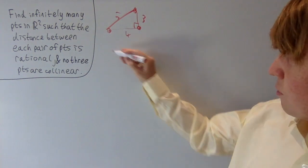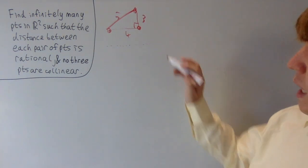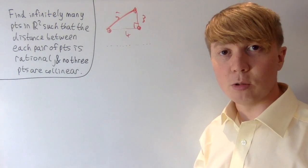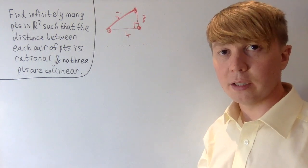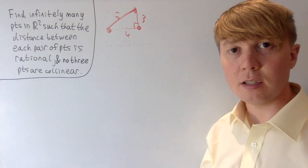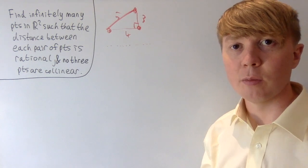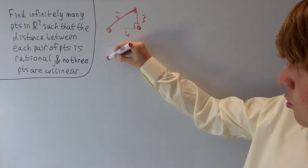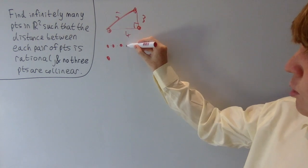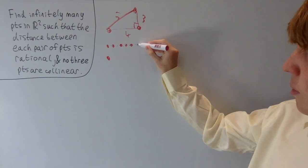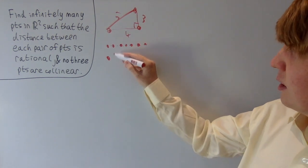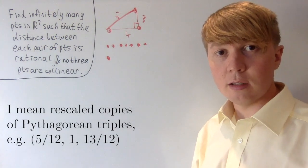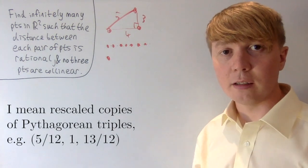There's a really nice way of doing this if you allow all of your points to lie on a straight line. We could just take, for example, the x-coordinate to be rational and the y-coordinate to be 0 — then the distance between each pair of points is a rational number. We could even extend this to have maybe just one point off our line, and if we choose our points carefully so that we always have nice Pythagorean triples, we can make the distance rational again.